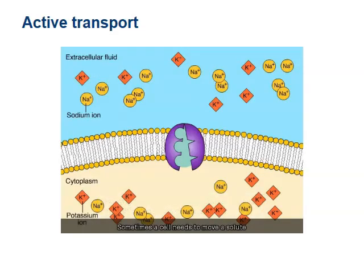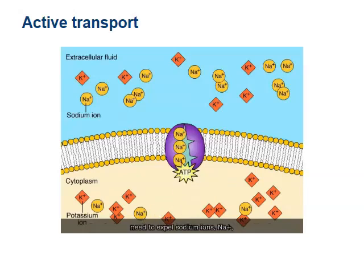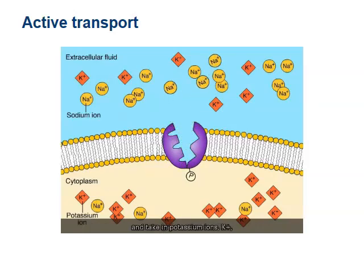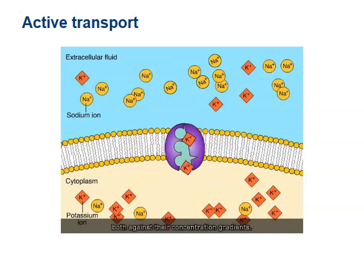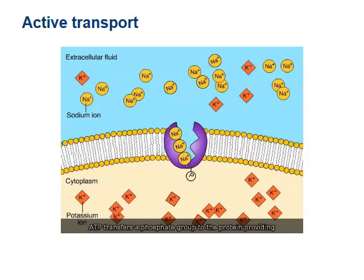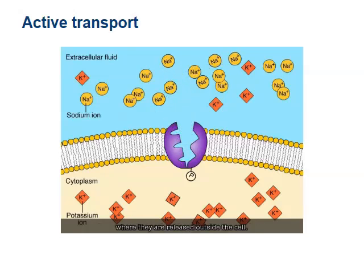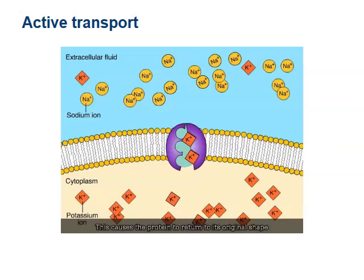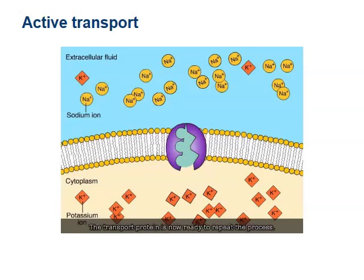Active transport moves solutes against their concentration gradient, requiring ATP energy. Most animal cells expel sodium ions (Na+) and take in potassium ions (K+), both against their concentration gradients. The sodium-potassium pump cycles by binding sodium, using ATP phosphate energy to change shape and release sodium outside, then binding potassium outside, releasing the phosphate, returning to original shape, and releasing potassium inside. The transport protein is then ready to repeat the process.